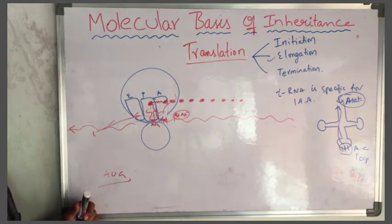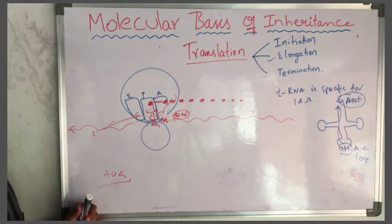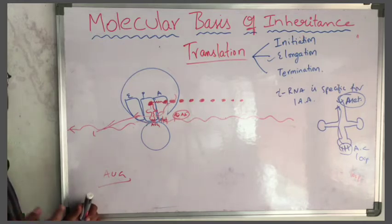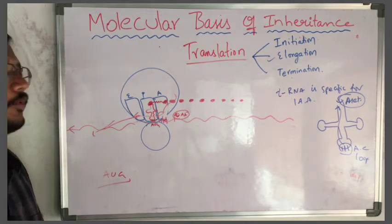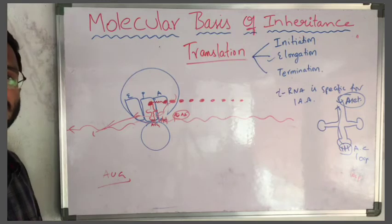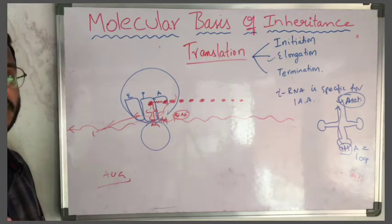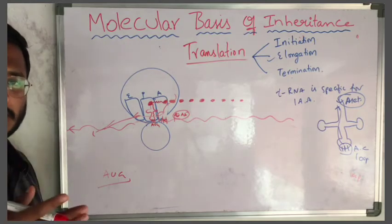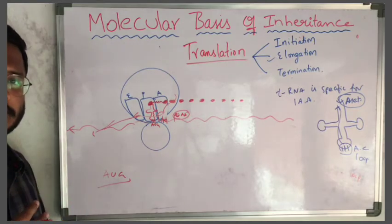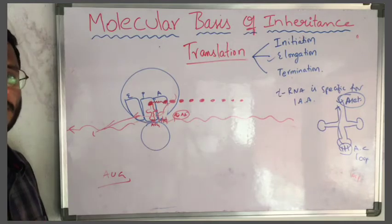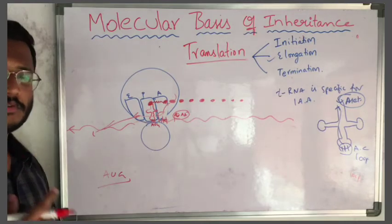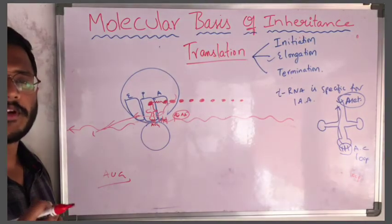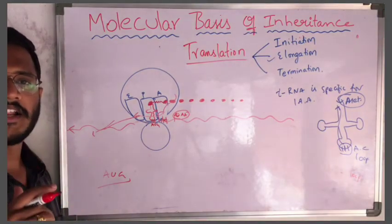Translation occurs in the cytoplasm and transcription occurs in the nucleus. In prokaryotes, since there is no membrane-bound nucleus, both transcription and translation occur in the cytoplasm. In eukaryotes, transcription is in the nucleus and translation is in the cytoplasm. These codons are universal — wherever you go, the triplet codon UUU codes for phenylalanine, and AUG codes for methionine.